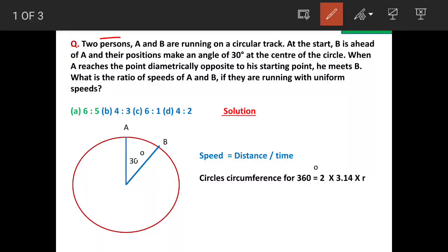Two persons A and B are running on a circular track. At the start, B is ahead of A by 30 degrees. When A reaches a place which is diametrically opposite to his start point, he meets B.